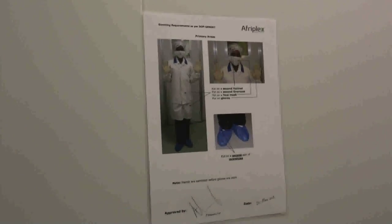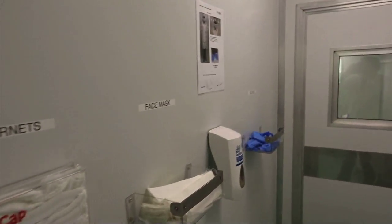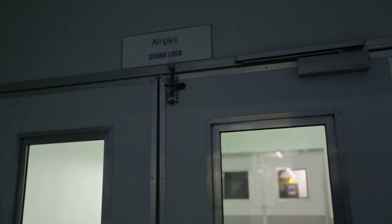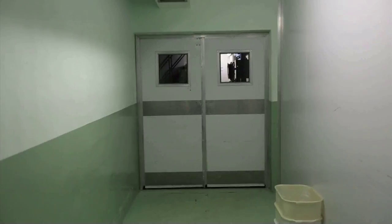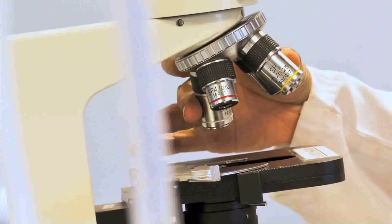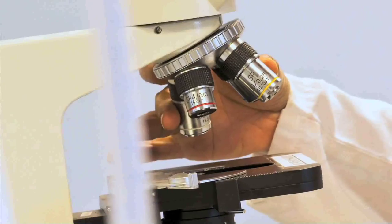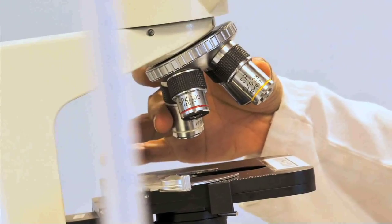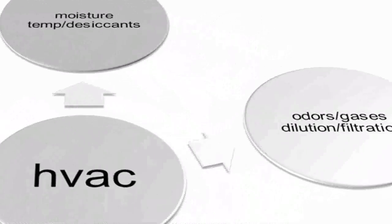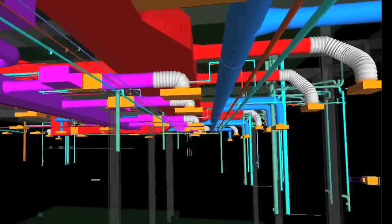Goods locks are decontamination chambers between two sealed areas. Personnel have their own locks to go from one area to the next. This is done to ensure high hygienic standards and limit cross-contamination. The entire building is regulated with different qualities of air, managed by a heating, ventilation and air conditioning system.